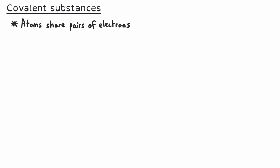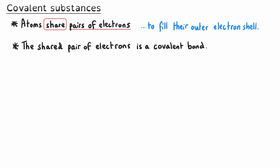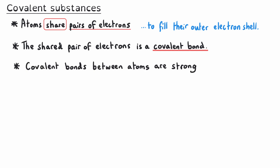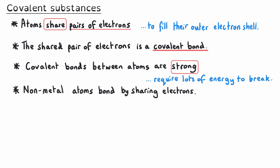Covalent substances are formed when atoms share pairs of electrons to fill their outer electron shell and become stable. The shared pair of electrons is a covalent bond, and it's that shared pair of electrons that holds the atoms together. The covalent bonds between atoms are very strong, which means they are very difficult to break — it requires a lot of energy to separate the atoms. The type of atoms that form covalent bonds are non-metals, and they bond together by sharing electrons.